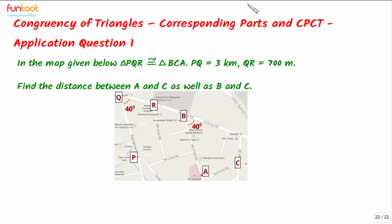Here we have an application question on corresponding parts and CPCT. Our question is: in the map given below, triangle PQR is congruent to triangle BCA. We can join point Q to point P, point P to point R, and point Q to point R, so we can see that PQR forms a triangle.